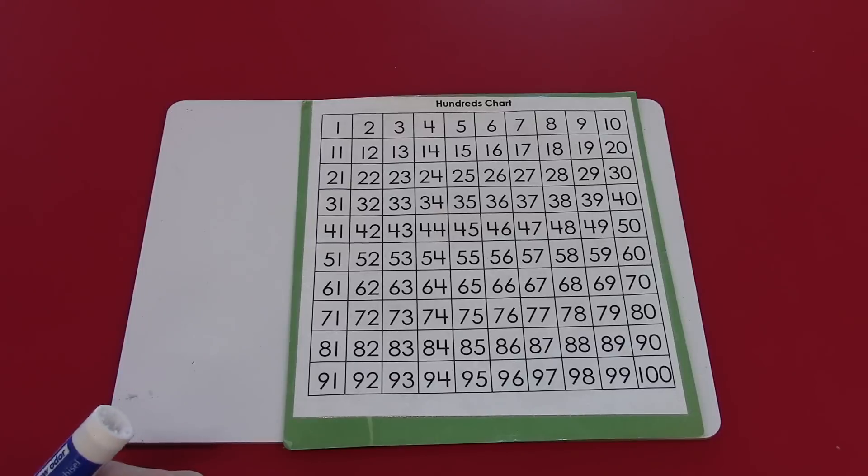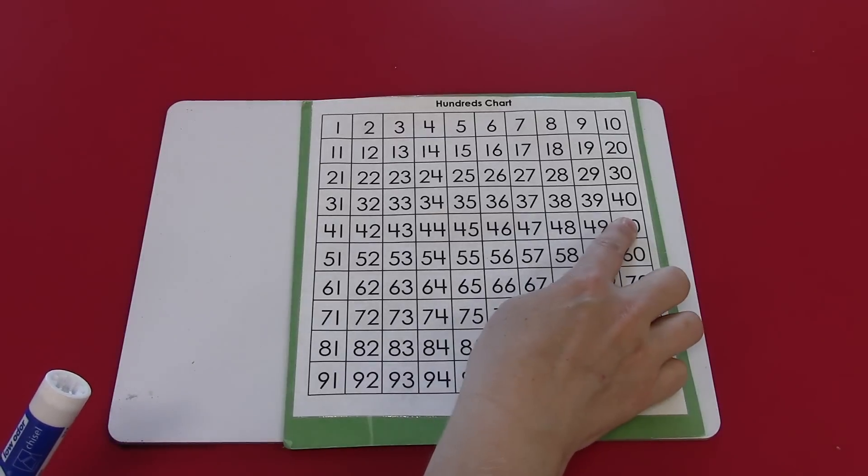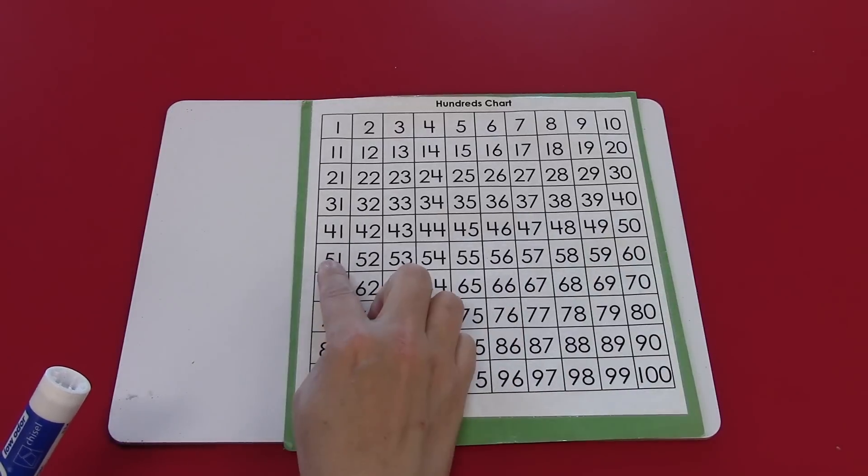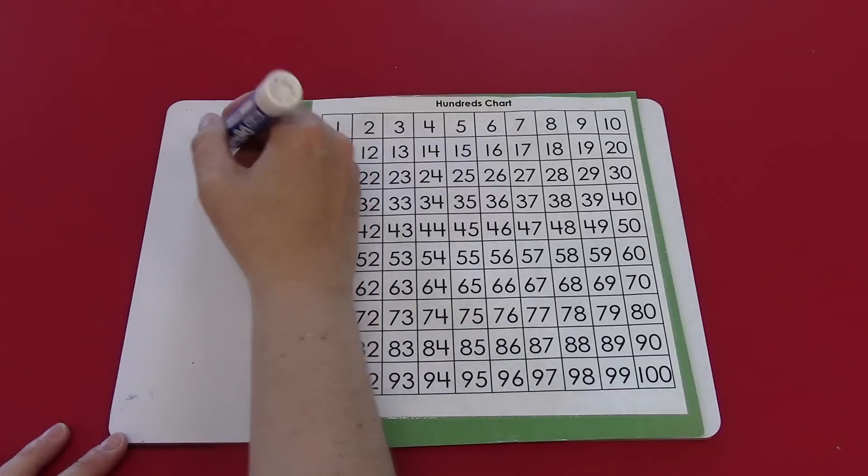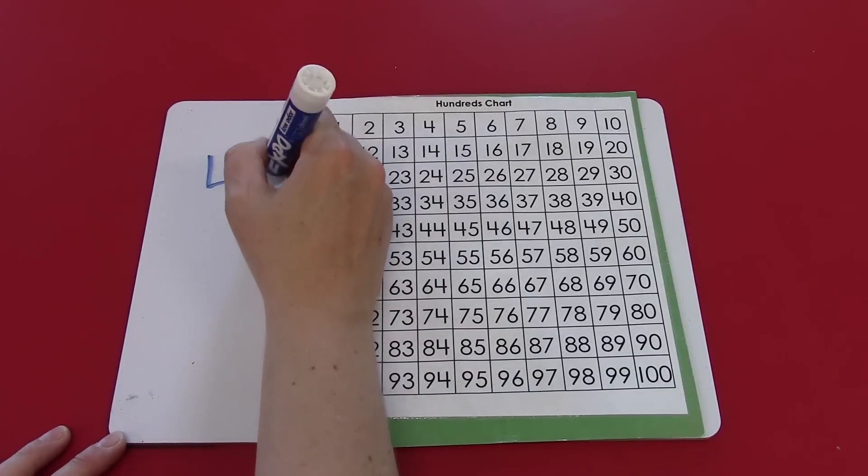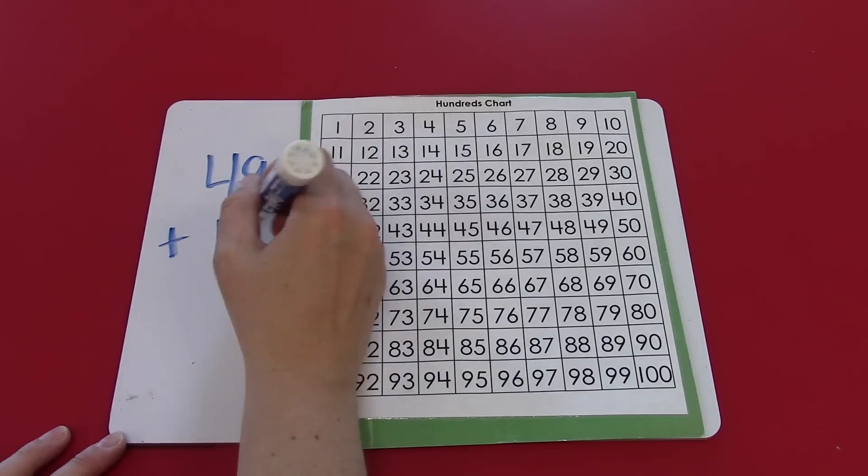Let's try another one where we have to move from the end of one row to the beginning of another. Let's try 49 plus 19.